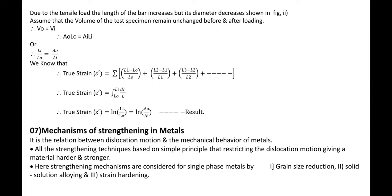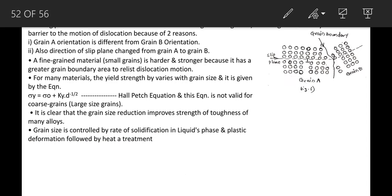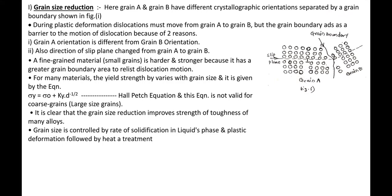In this video lecture we are going to discuss mechanisms of strengthening in metals. There are three mechanisms: first is the grain size reduction mechanism, second is solid solution alloying, and third is strain hardening.